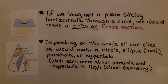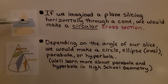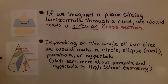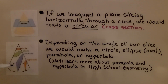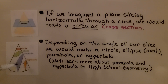If we imagined a plane slicing horizontally through a cone, we would make a circular cross-section. And depending on the angle of our slice, we would make a circle, an ellipse — that's an oval — a parabola, or a hyperbola. We'll learn more about parabola and hyperbola in high school geometry.